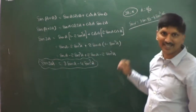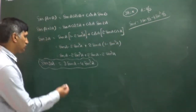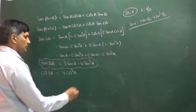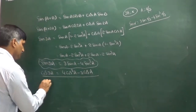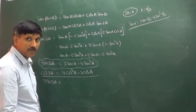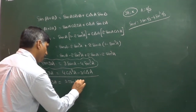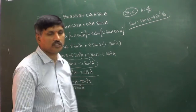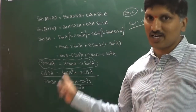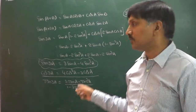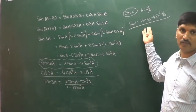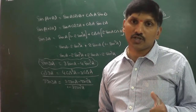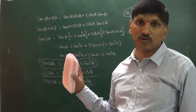That is, sin 3A = 3sinA - 4sin³A. Similarly, if 3A = α then A = α/3, and sin α = 3sin(α/3) - 4sin³(α/3). We also have cos 3A = 4cos³A - 3cosA, and tan 3A = (3tanA - tan³A)/(1 - 3tan²A). These are the triple-angle formulas.